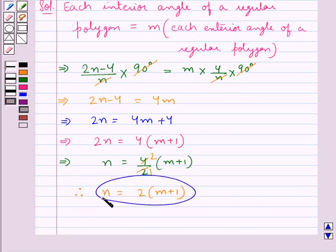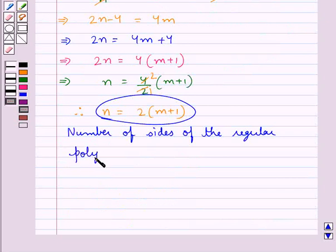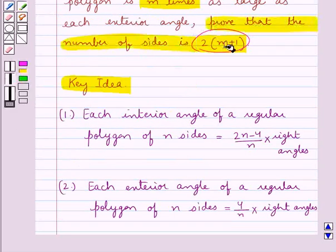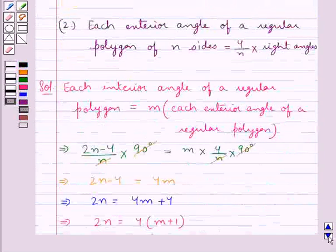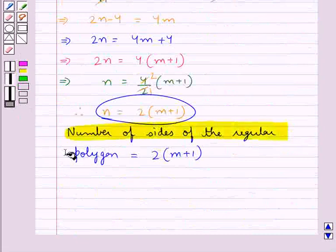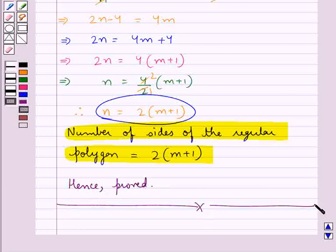We know that n is the number of sides of the regular polygon. Therefore, the number of sides of the regular polygon is equal to 2 into (m plus 1), and this is what we were supposed to prove. Hence proved. This completes the session. Hope you have understood the solution of this question.